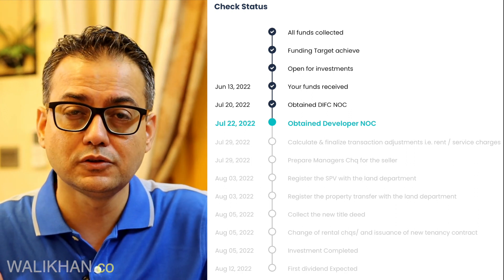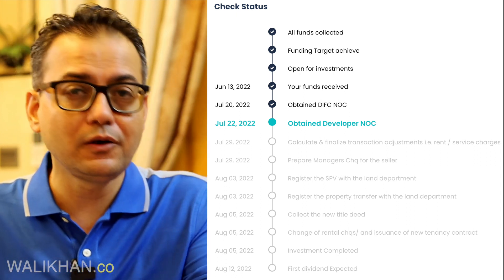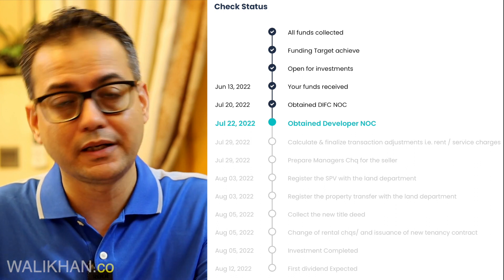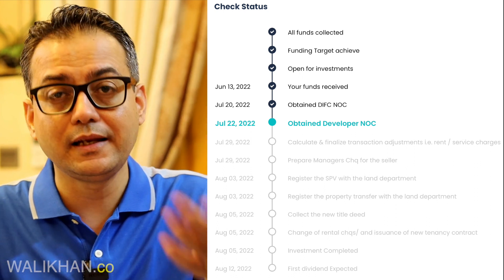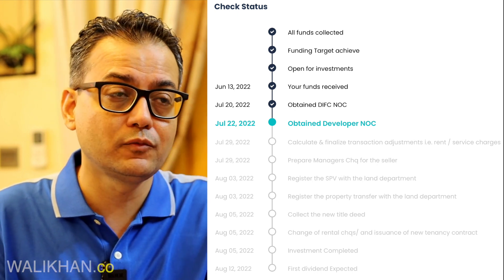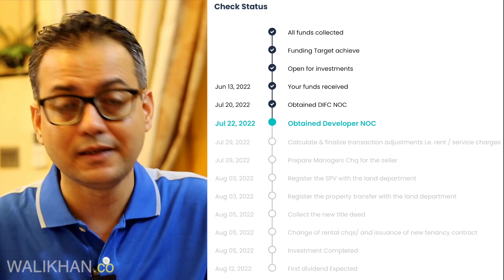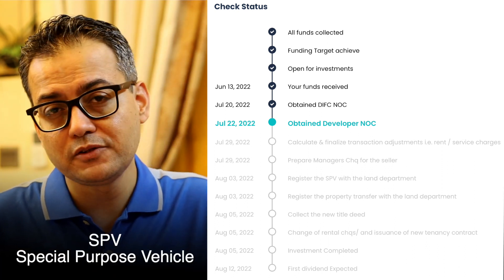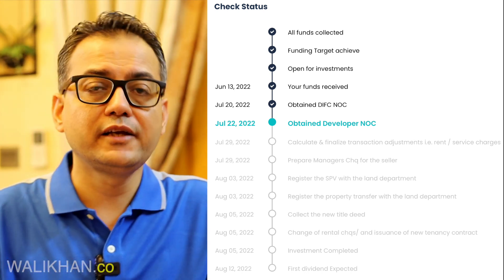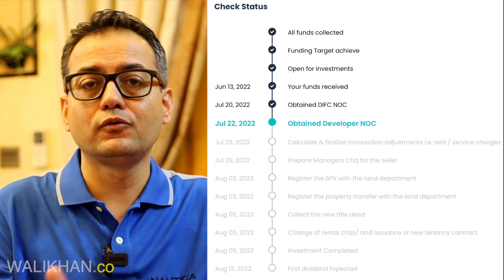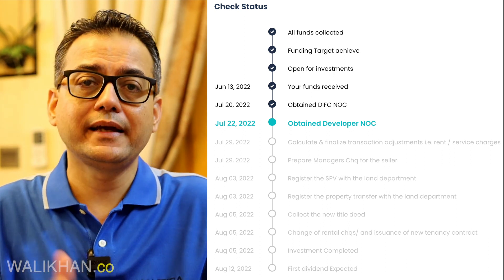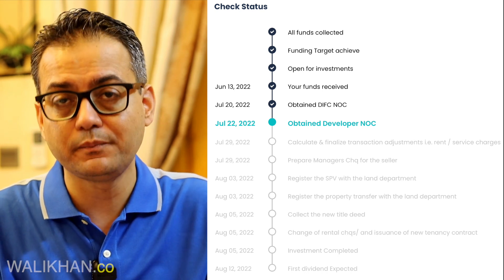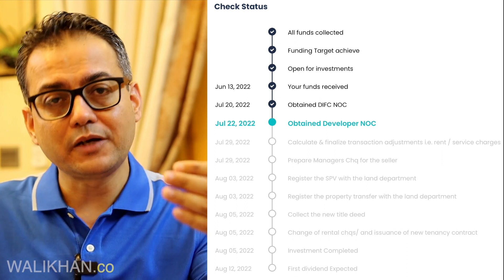Then the property transfer takes place. Since this property is held by multiple people, the title deed won't be in one or two people's names — it could be 20 or 25 people. In my example, there were about 53 investors. When there are many people, an SPV — Special Purpose Vehicle — is created for the investment, registered with the Dubai Land Department. Your name appears in the DIFC official register, and can be viewed online.